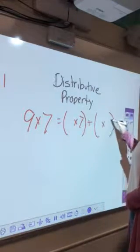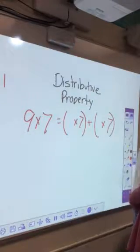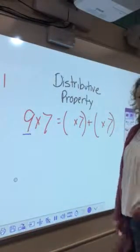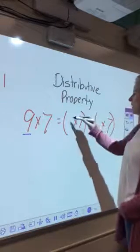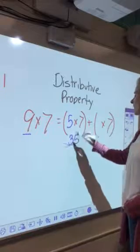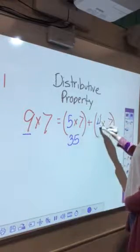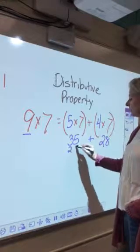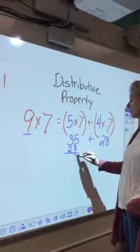This time I'm choosing to break apart the 9. Again, fives are really good for me, so I'm going to break 9 into 5 and 4. So now I have to add 35 and 28.